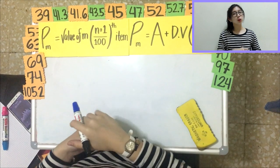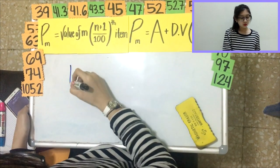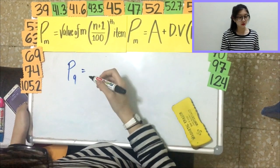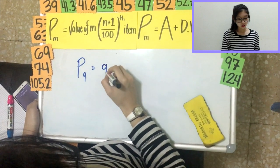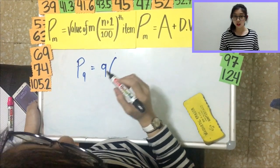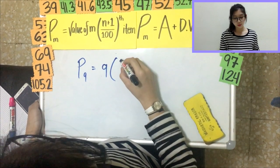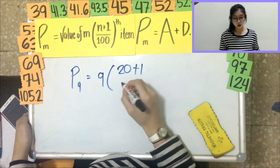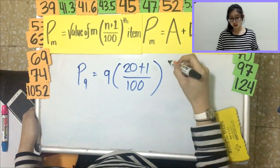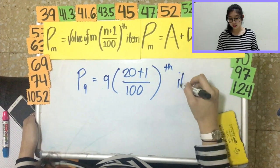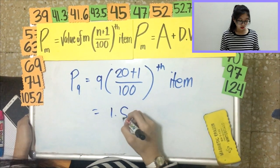The first problem that we're trying to find is the ninth percentile. So, for the ninth percentile, following the formula, value of M, which is 9, multiplied with N plus 1 over 100. N is the number of data that you have, so that is 20 plus 1 over 100. Since we are dealing with percentile, that will give you the nth item. That is equal to 1.89.